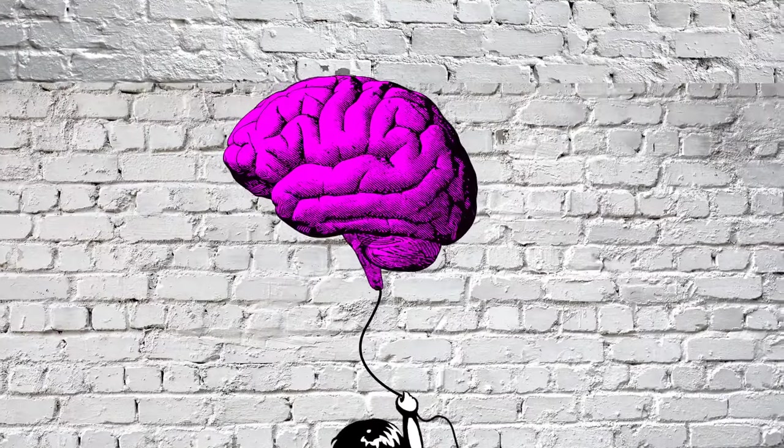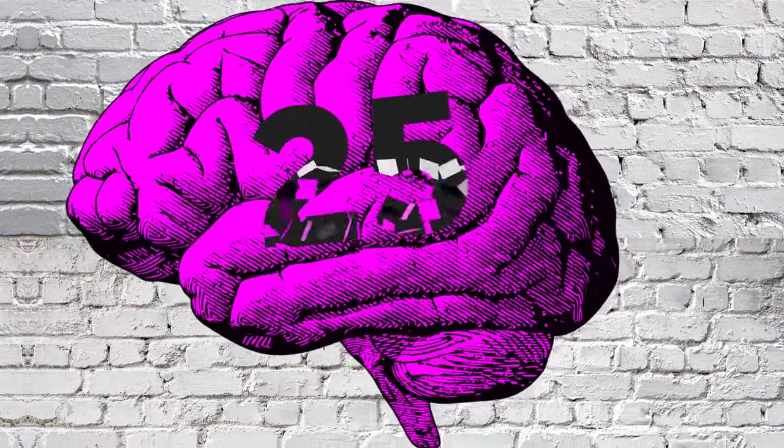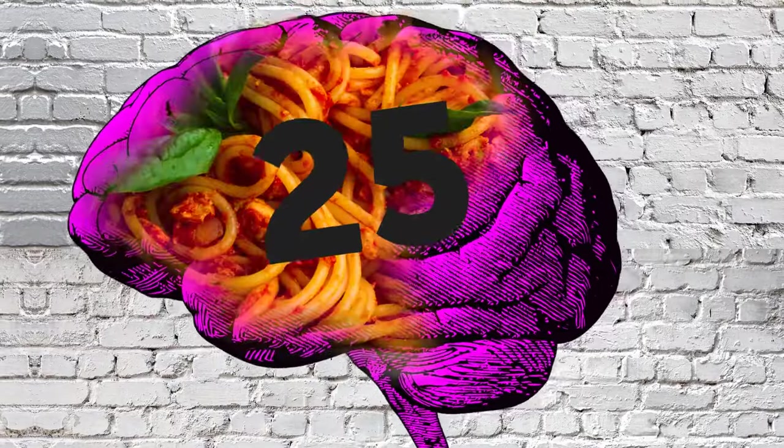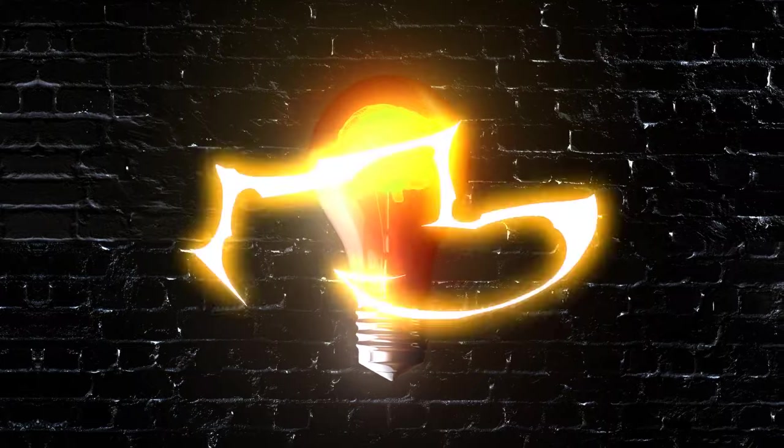Your brain gets three times bigger over the first year of life and reaches its full maturity when you're 25. 60% of it is fat. Your brain generates around 23 watts of electrical power, which is enough to run a small light bulb.